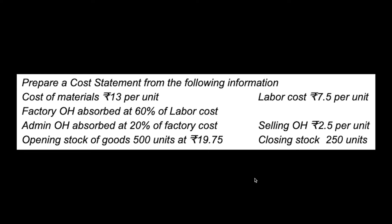The cost statement preparation is the fourth and final problem. Just a straightforward particular situation: cost of materials 13 per unit, labor cost 7.5 per unit, factory overhead absorbed at 60% of labor cost, admin overhead absorbed at 20% of factory cost, selling overhead 2.5 per unit, opening stock of goods 500 units at 19.75, and closing stock 250 units.